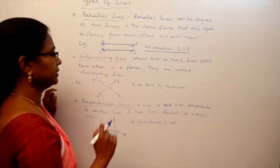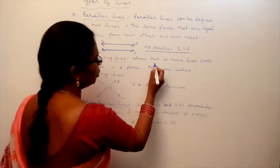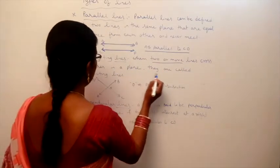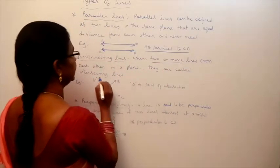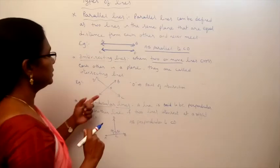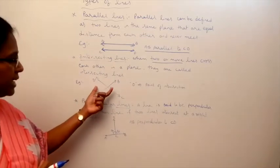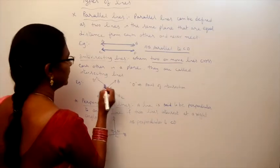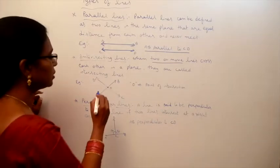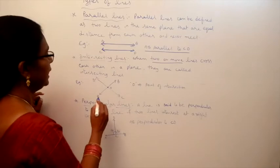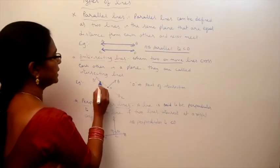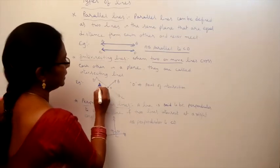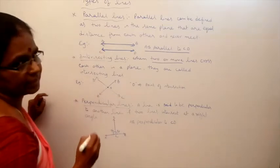Next, intersecting lines. When two or more lines cross each other in a plane, they are called intersecting lines. Here, two lines will cross each other at point O. AB intersects CD at O, so AB and CD are intersecting lines.